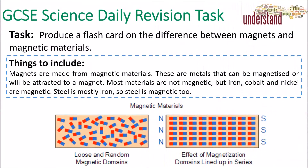These are made from magnetic materials — metals that can be magnetized or will be attracted to a magnet. Most materials are not magnetic, but iron, cobalt, and nickel are magnetic. Steel is mostly iron, so steel is also magnetic.